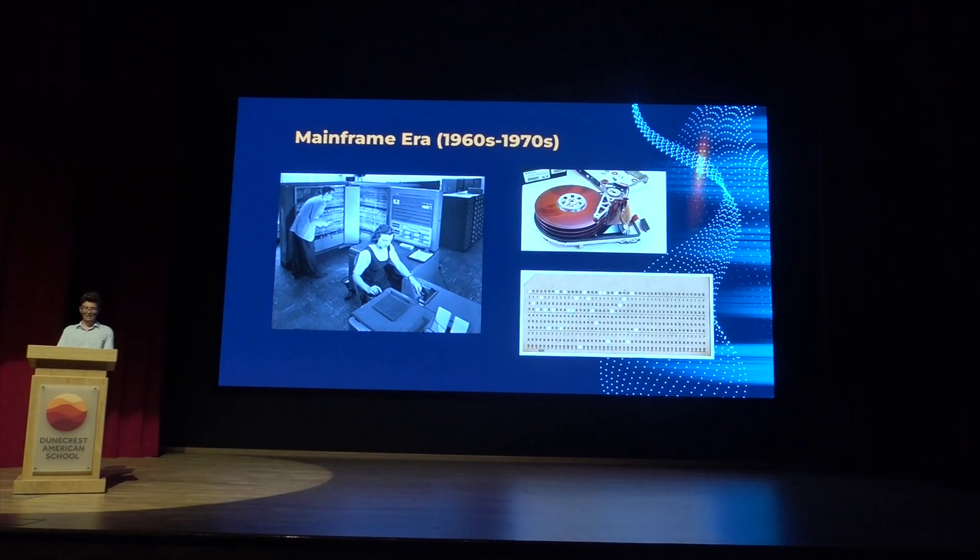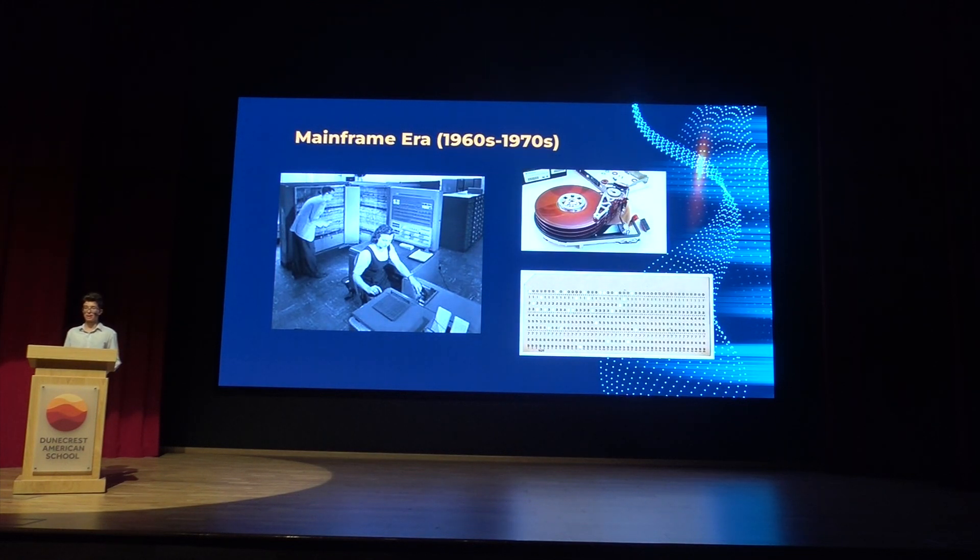Transistors used semiconductor materials, such as silicon, to control the flow of electrons. This era also saw the introduction of punch cards for input and output, making programming more accessible and allowing users to provide instructions to machines. The 1960s and 1970s witnessed the advent of mainframe computers, which became the backbone of large-scale data processing for companies and organizations. During this time, magnetic tape and magnetic disks were being used as early forms of data storage.